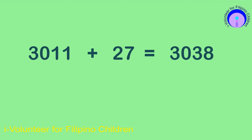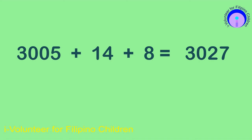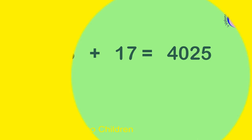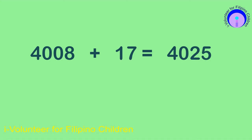3,011 plus 27 is equal to 3,038. 3,005 plus 14 plus 8 is equal to 3,027. 4,008 plus 17 is equal to 4,025.